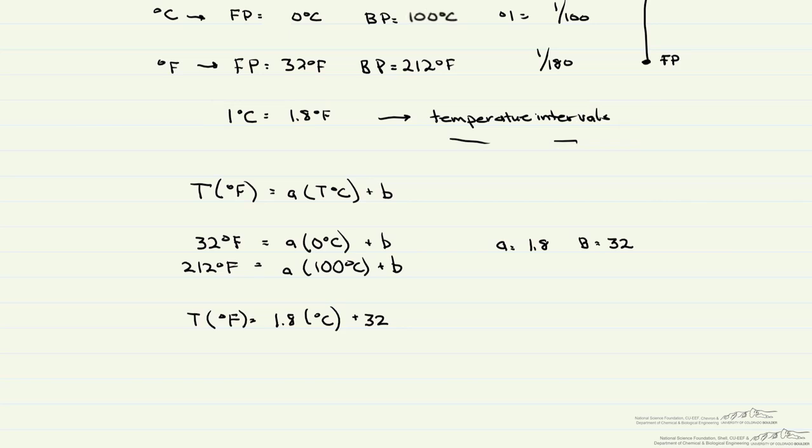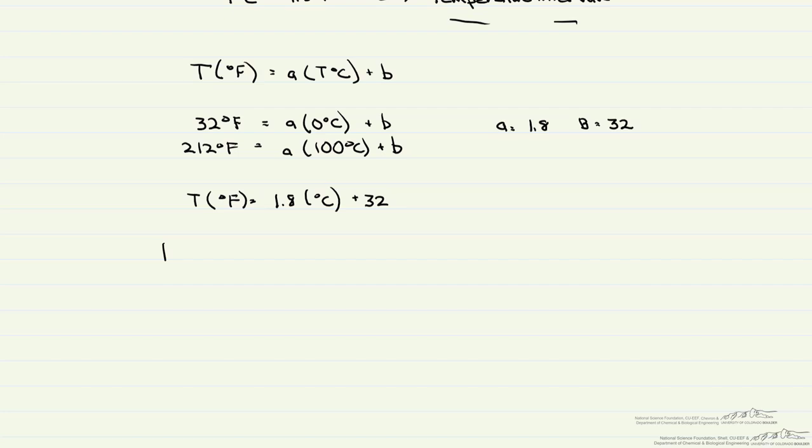We also have absolute temperature scales. If you're using Celsius, you use Kelvin. And if you're using Fahrenheit, you use Rankine. These absolute temperature scales are such that absolute zero for both of these scales is zero. However, the size of the degree is the same. So one degree Celsius is equal to one Kelvin and one degree Fahrenheit is equal to one degree Rankine. So the intervals are exactly the same.